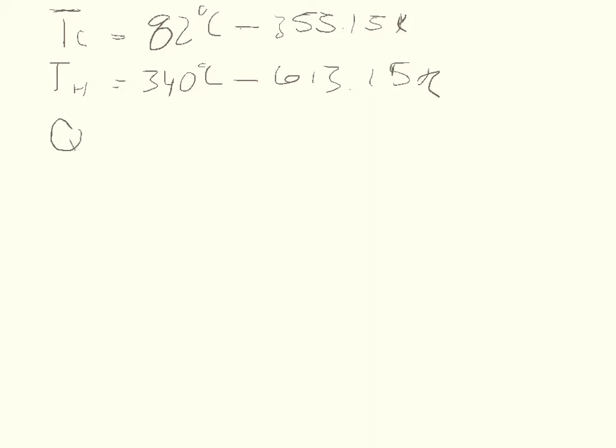Let's write down what we know from the problem. The temperature of the cold cycle is 82 degrees Celsius. The temperature of the hot cycle is 340 degrees Celsius, which translates to 355.15 Kelvin and 613.15 Kelvin respectively. It absorbs 21,600 joules of energy from the hot reservoir, so QH equals 21,600 joules. And the change of time equals 4 seconds.